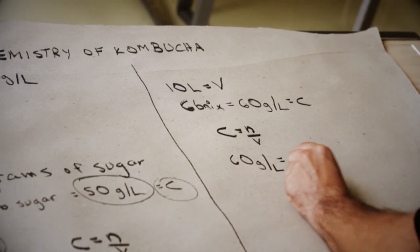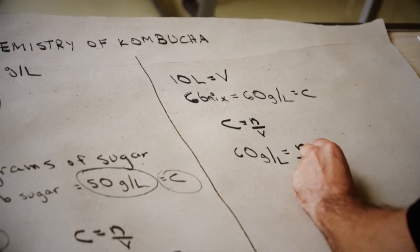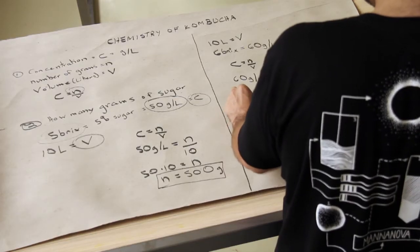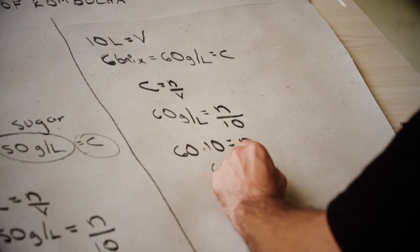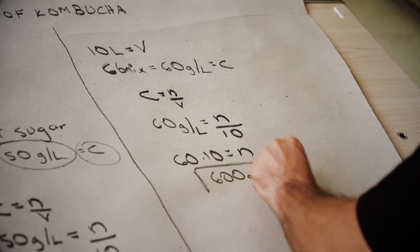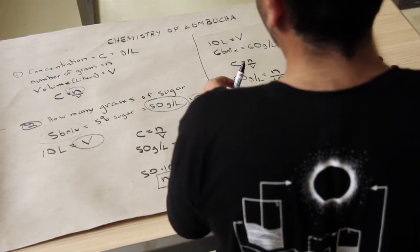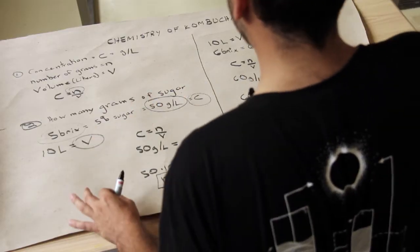What's my N? I don't know what my N is, so I'm going to put that there. What's my volume? 10 liters. We're going to do the same thing as before. We're going to do 60 times 10 equals N. 600 grams. So basically what we've done is we've asked two different questions but solved it in the same way.